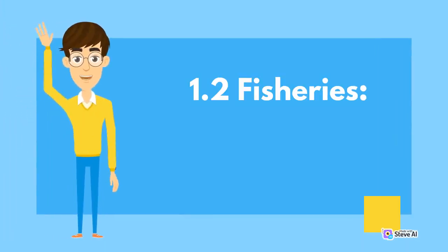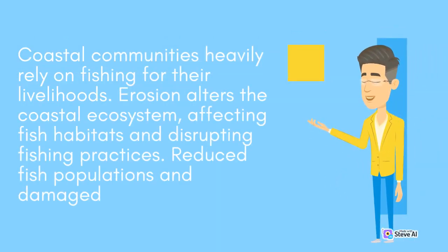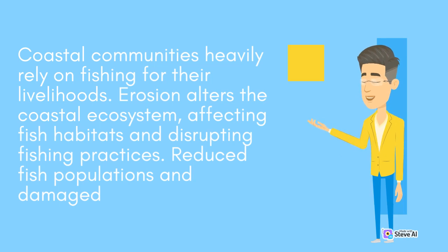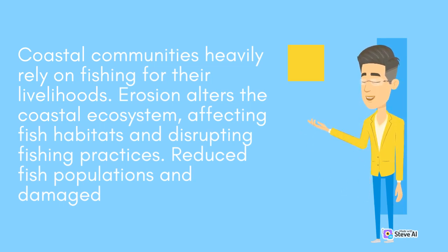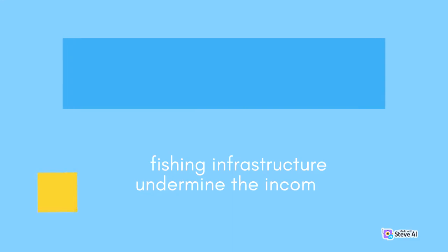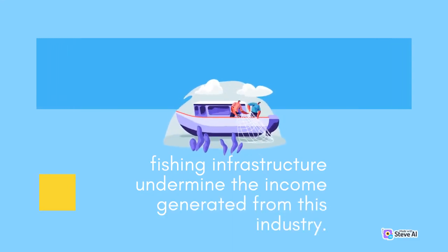1.2 Fisheries. Coastal communities heavily rely on fishing for their livelihoods. Erosion alters the coastal ecosystem, affecting fish habitats and disrupting fishing practices. Reduced fish populations and damaged fishing infrastructure undermine the income generated from this industry.